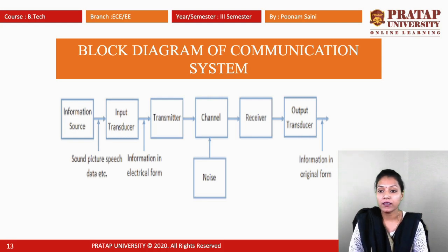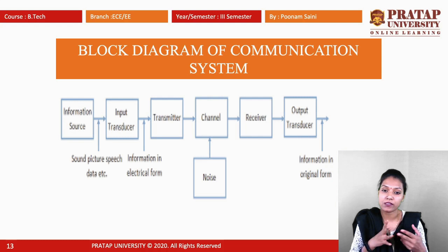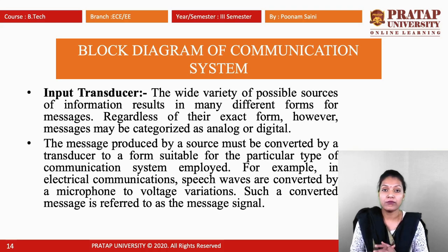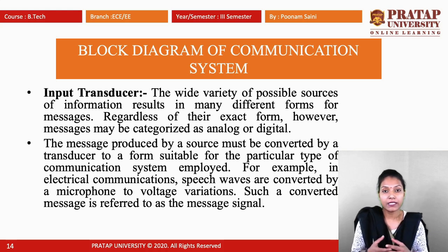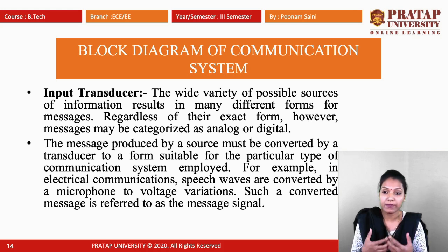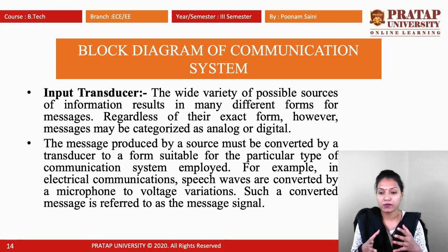Looking at the block diagram of a communication system: first is the information source, second is the input transducer, third is the transmitter, then the channel, receiver, and output transducer — with noise added at the channel. The wide variety of possible sources of information exist in many different forms, and messages may be categorized as analog or digital.